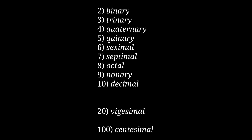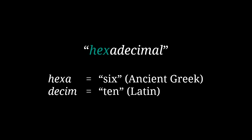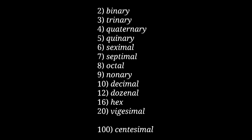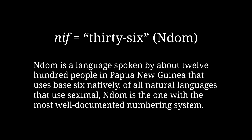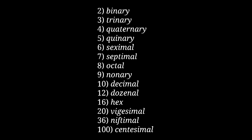On top of that set of Latin-ish names, this system also incorporates a couple names for bases that are already well-known: dozenal for base 12 and hex for base 16. Hex is short for hexadecimal, a mixed Greek-Latin name that's very base 10, but the shorter name hex is a commonly used alternative that's just base-neutral enough to fit in with this system. I also incorporated the name niftimal for base 36, from the dozenal word 'nif' meaning 36, which is also used in my English-language implementation of seximal. Niftimal also happens to sound a bit like the word 'nifty,' which is very fun.